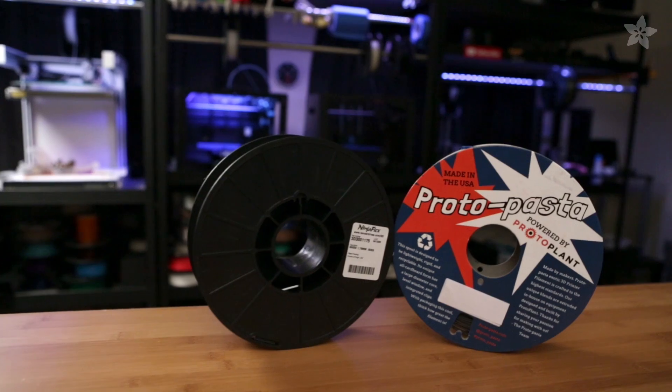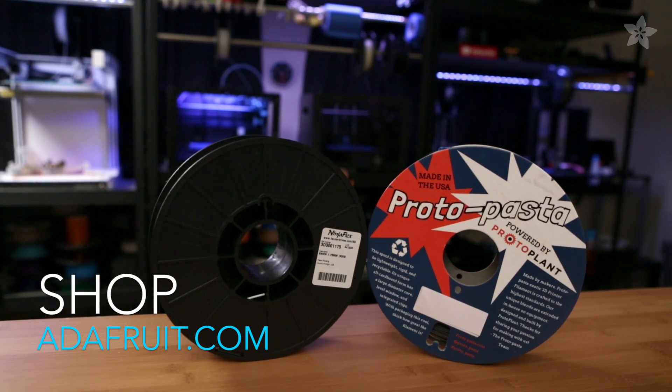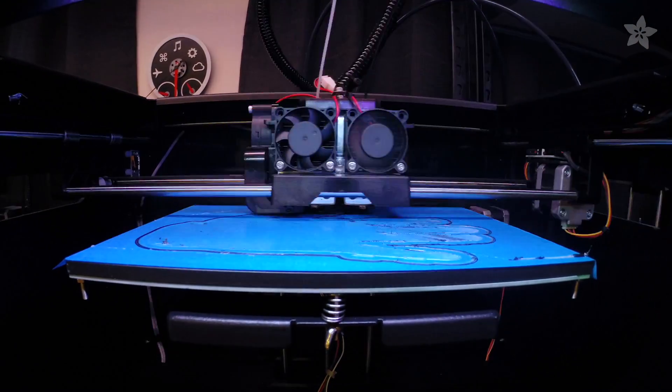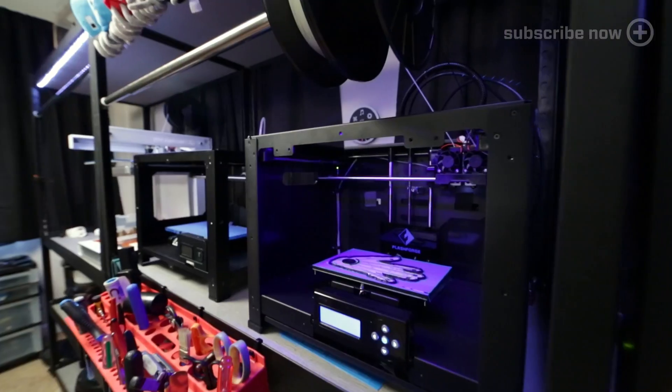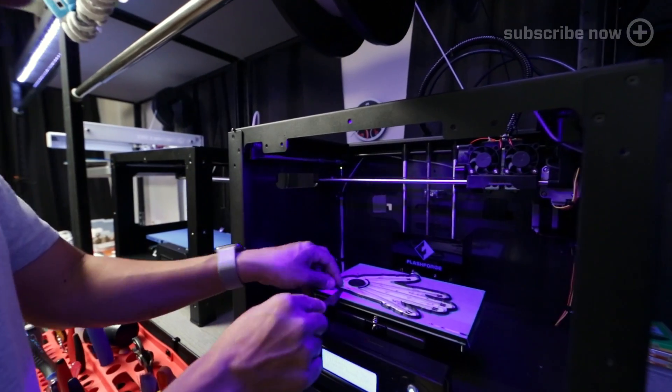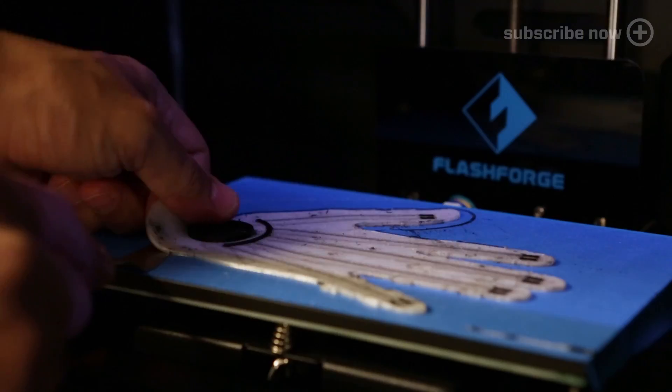Conductive filament from Proto-Pasta bonds really well to NinjaFlex and it actually doesn't need a heated bed and it's going to stick to most build plates. For this project we use the FlashForge Creator Pro. When printing with NinjaFlex, you want to set the print speed at 45 millimeters a second. That way we get good layer adhesion.